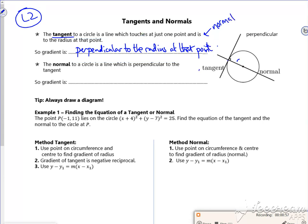Perpendicular to the radius, the radius being the normal at that point. The normal to the circle is a line which is perpendicular to, well that's just the gradient of the radius, the gradient is the gradient of the radius at that point.